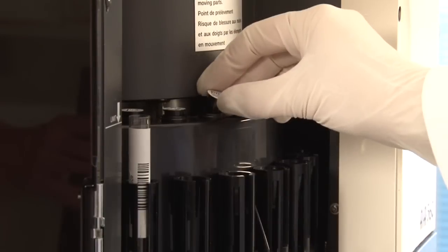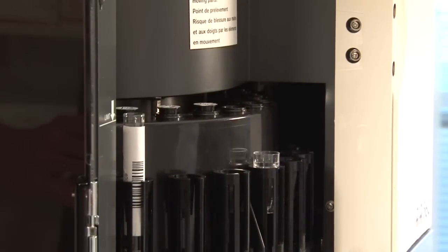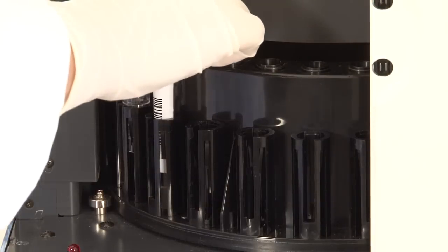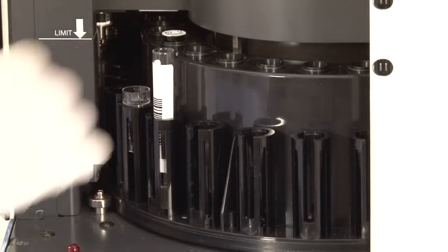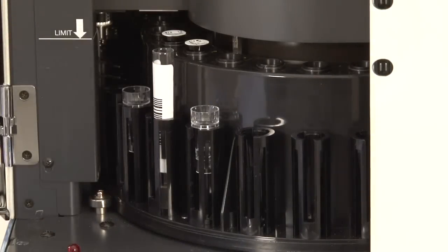The AIA360 has a sample capacity of 25 tubes and/or cups and will run up to 4 tests per sample. The minimum specimen sample volume for a tube is 500 microliters and 100 microliters for sample cups.